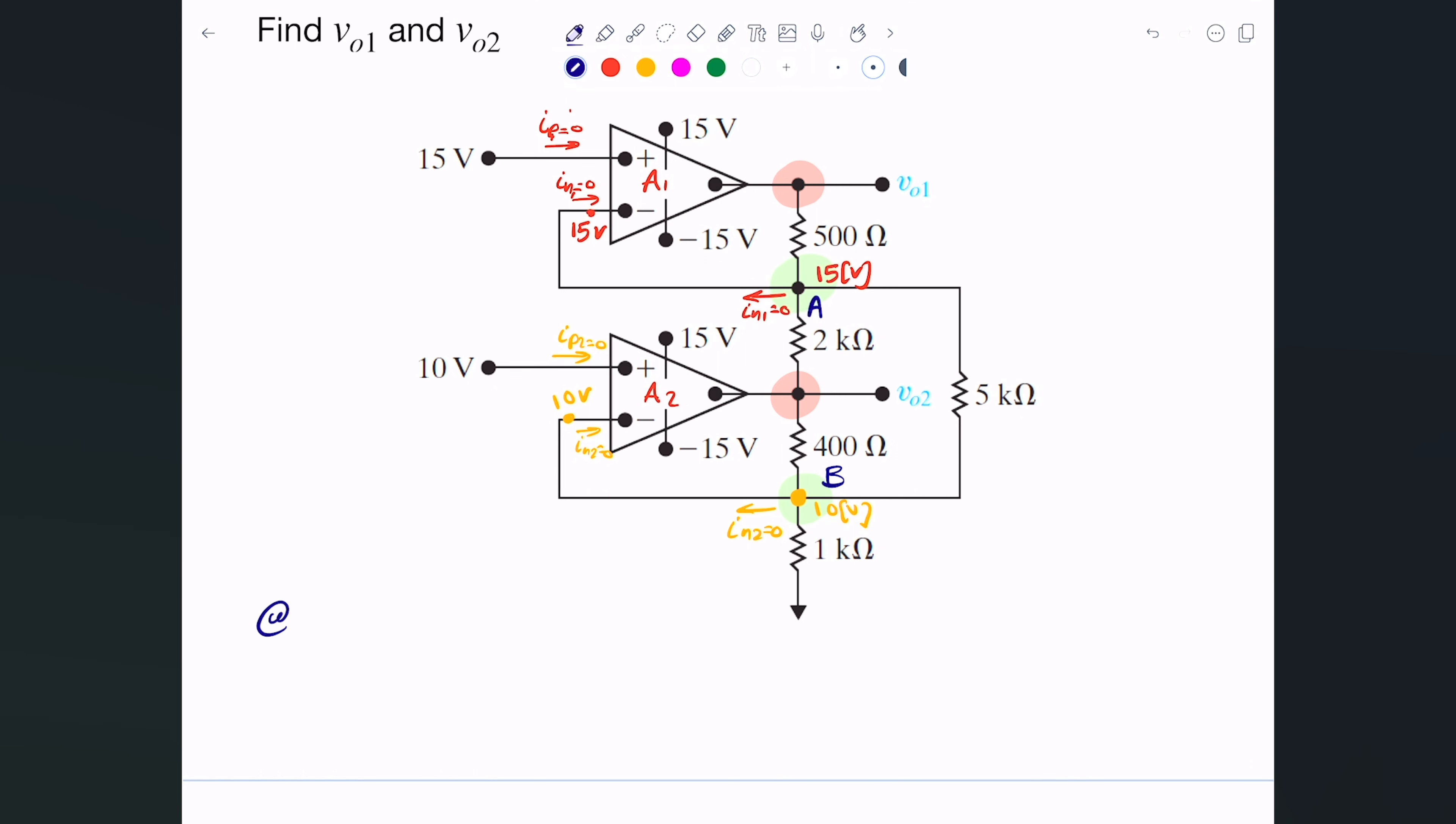Let's write nodal at A. This current is zero, so that leaves me this branch, this branch, and this branch. That will be 15 volts minus the V output 2 that I'm looking for divided by the 2 kilo ohms. This is the current going that way.